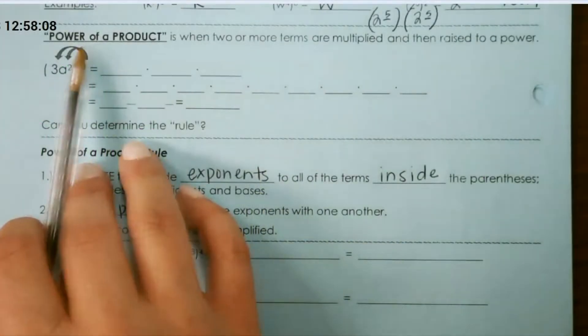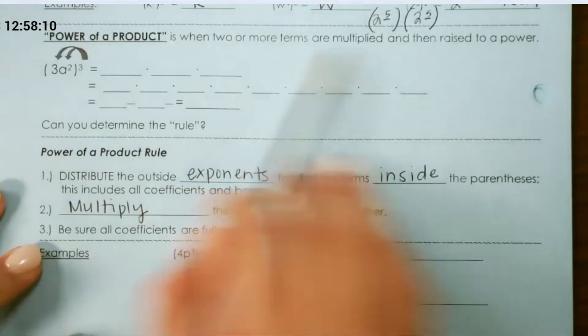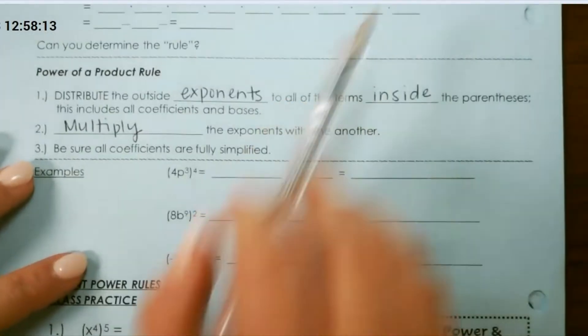The power of a product is when two or more terms are multiplied and then raised to a power. So let's look at our rules.